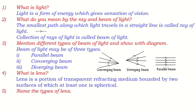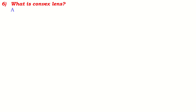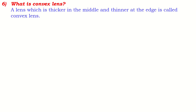Name the types of lens. Basically, a lens is of two types: one is called convex lens, and another is called concave lens. What is a convex lens? A lens which is thicker in the middle and thinner at the edge is called a convex lens. This is the major identity of convex lens.